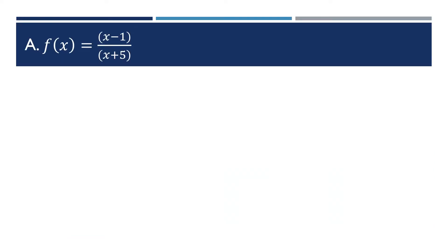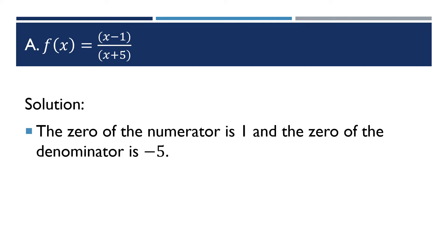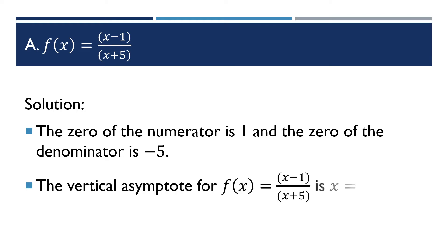Let's have example number 1. We have the function f(x) = (x − 1) / (x + 5). Let us find the zeros of the function. The zero of the numerator is 1 and the zero of the denominator is negative 5. So the vertical asymptote for this function f(x) = (x − 1) / (x + 5) is x = −5.